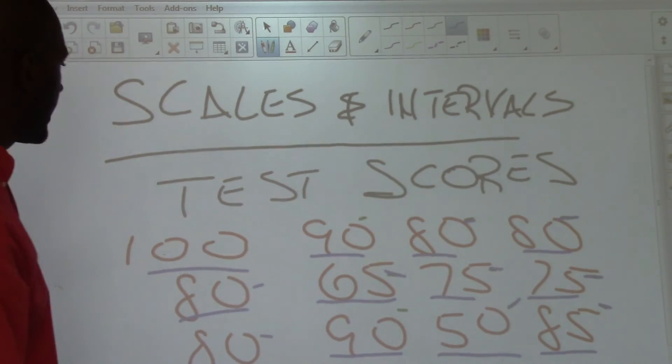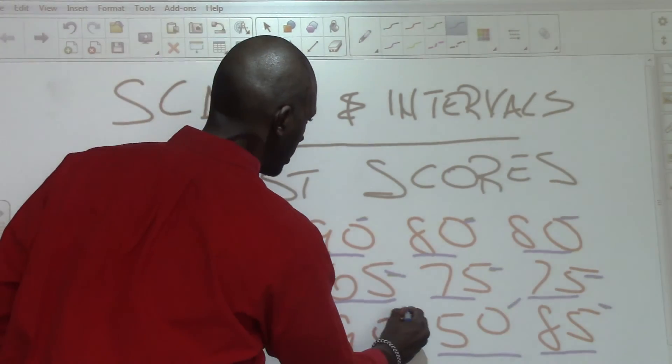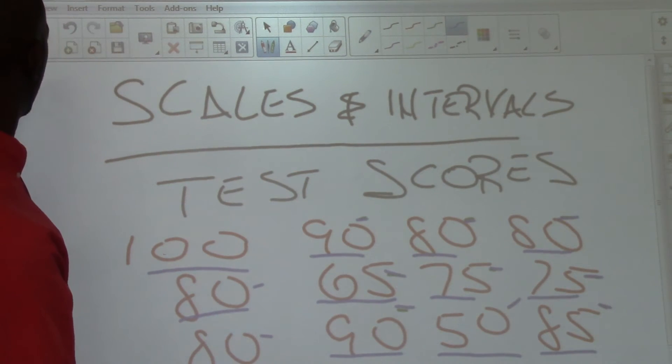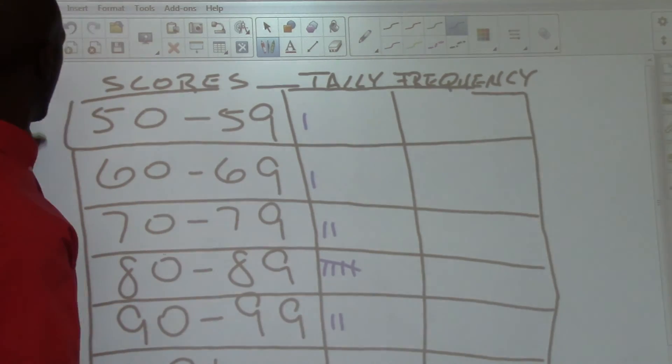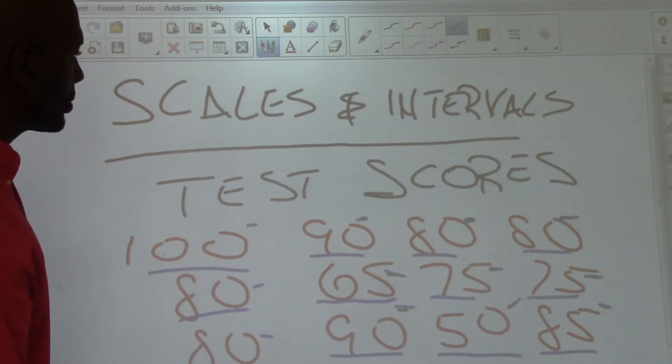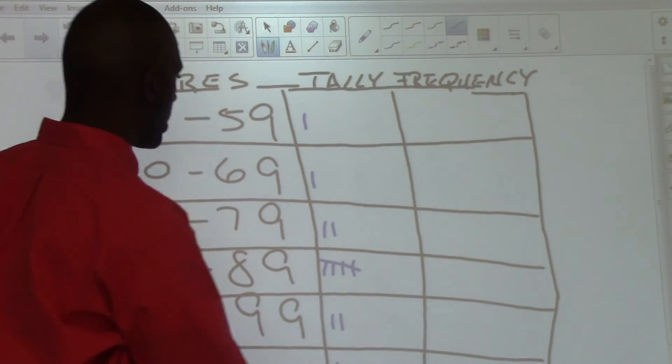From 90 to 99, we have 1, 90, 2, 90s, it's 2 tally marks. And we have only one 100, so we have one tally mark for 100.